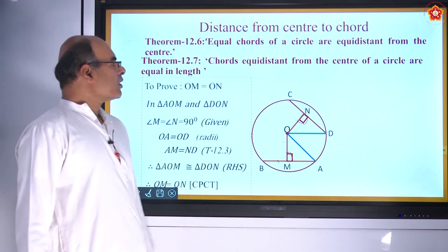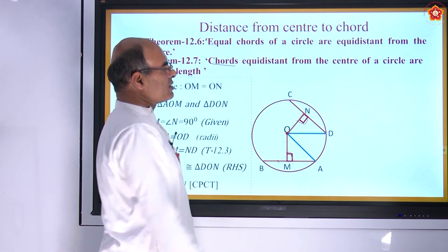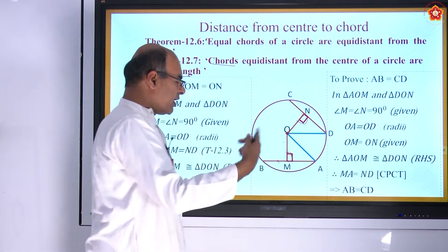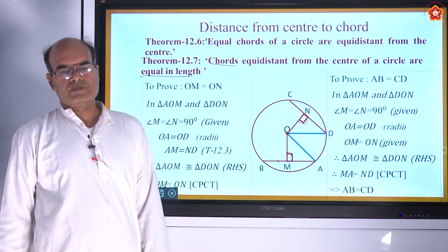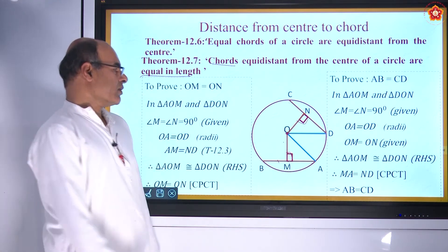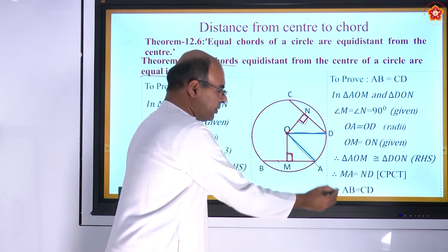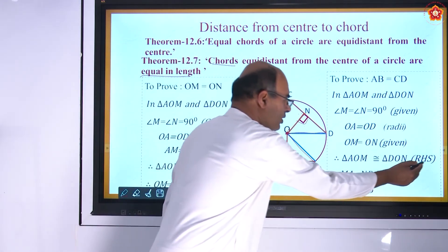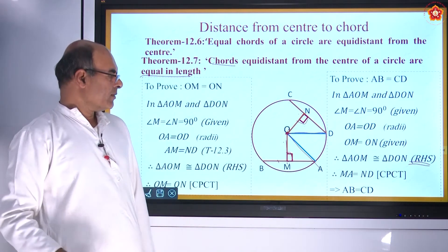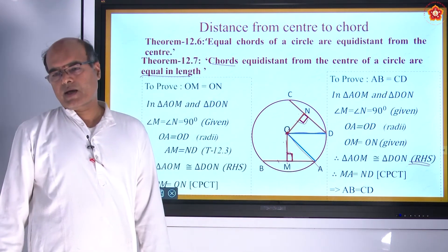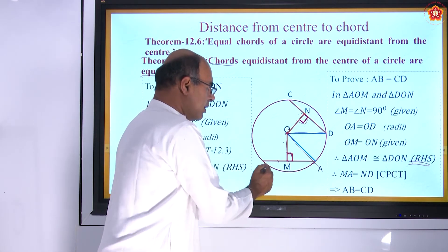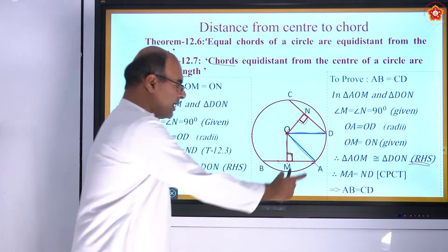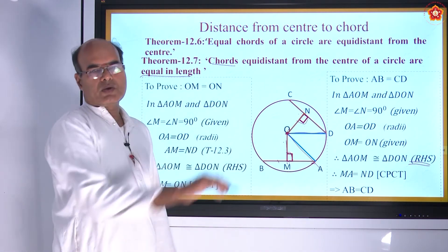Converse: Chords which are equidistant from the center of a circle are of equal length. Assuming OM equals ON, we prove AB equals CD. Both are right-angle triangles with equal hypotenuses and OM equals ON, so by RHS postulate the triangles are congruent. Therefore ND equals MA. Since AB equals 2·AM and CD equals 2·DN, and AM equals DN, we conclude AB equals CD.